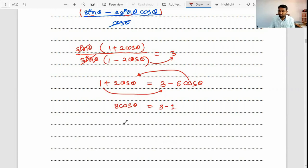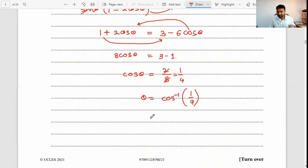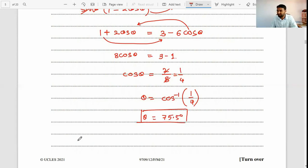3 minus 1 will be just 2, so cos θ is equal to 2 over 8, which means simply 1 over 4. So θ is equal to cos inverse of 1 by 4. When you put cos inverse of 1 over 4 in your calculator, you will get θ is equal to 75.5 degrees.